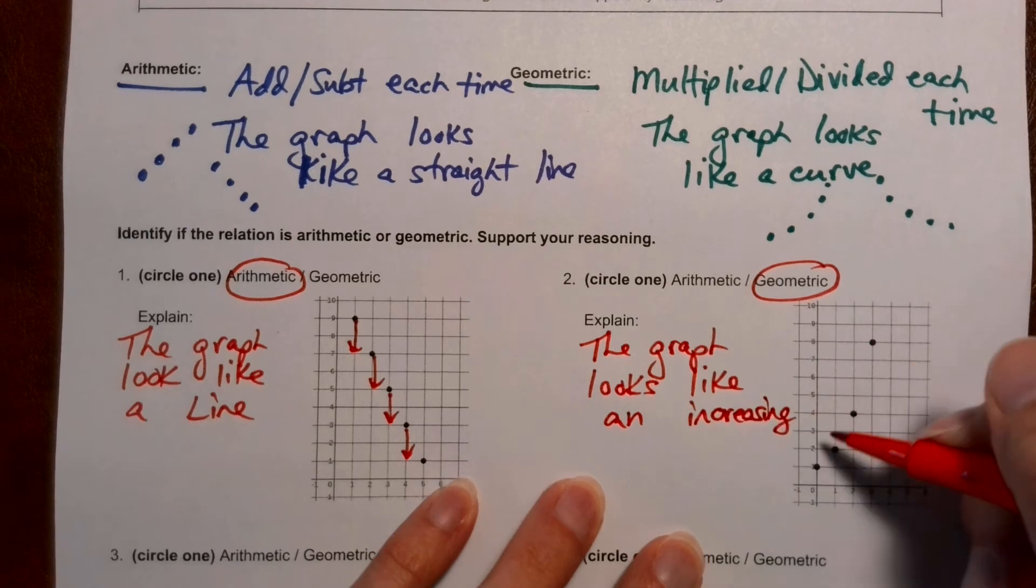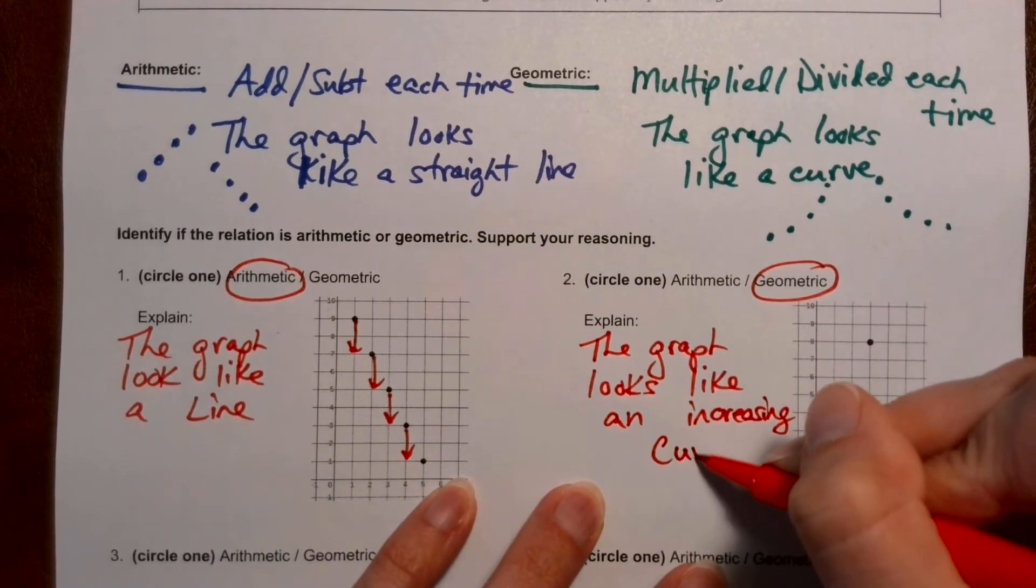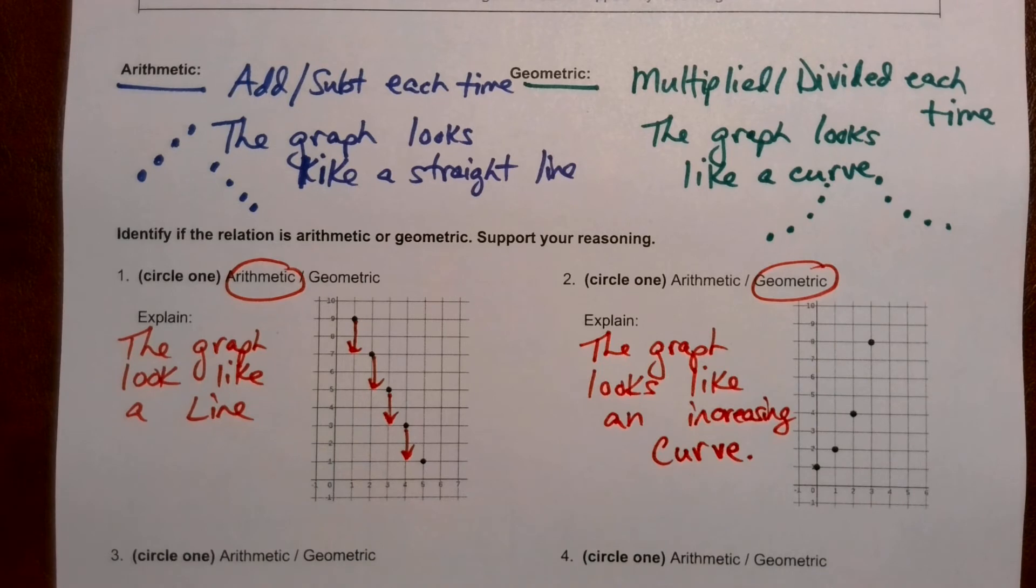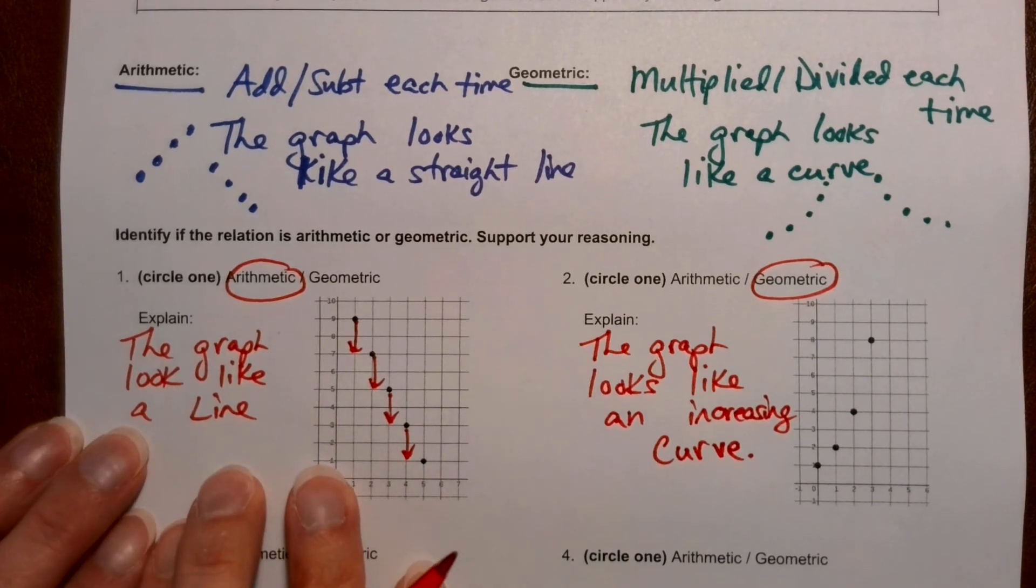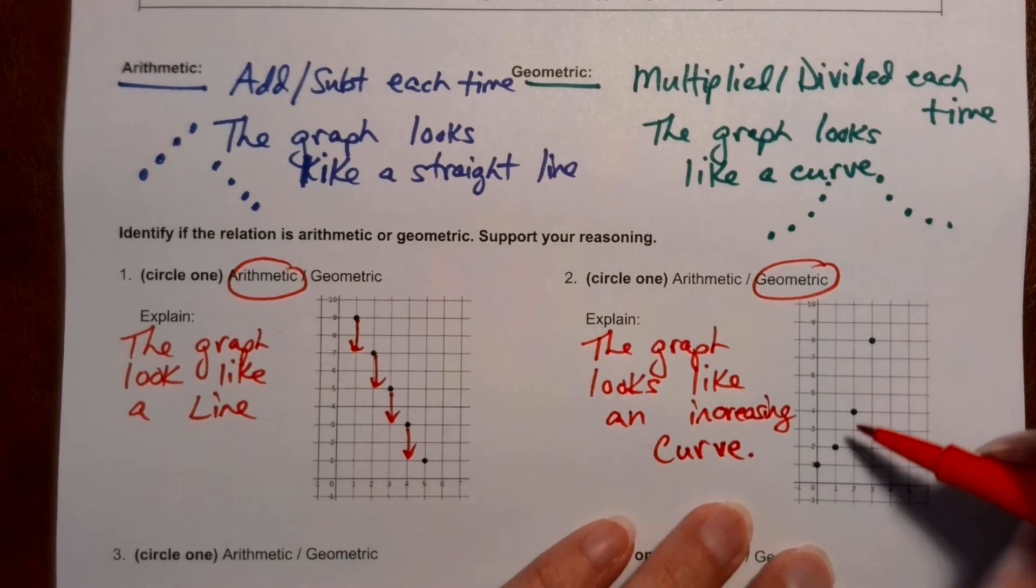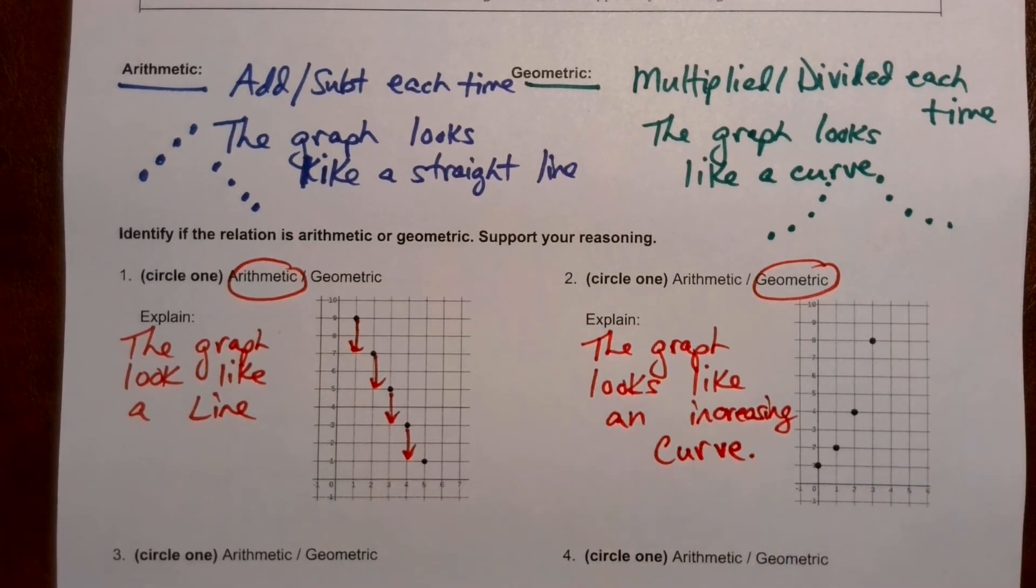Okay, if you want to be real nice and fancy because this is increasing. But you cannot say it looks like a straight curve. Okay, either a straight line or it looks like a curve. Okay, don't call this a line. It's a curve.